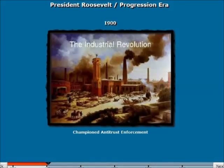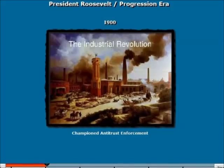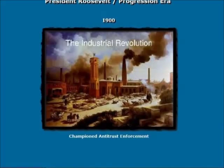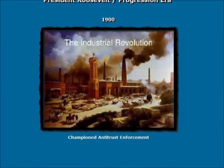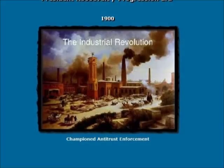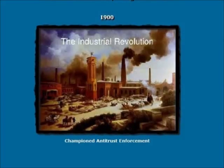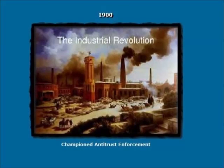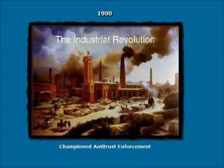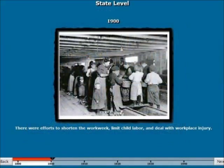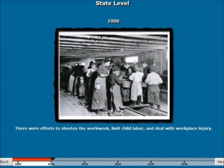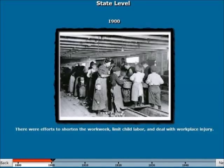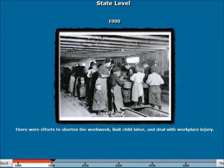At the turn of the century in 1900, Roosevelt was president and the country was going through what's referred to as the Progressive Era. During the Industrial Revolution, companies had become very monopolistic, so Roosevelt had anti-trust enforcements to break up companies in manufacturing, transportation, and some of the big oil companies. States were also dealing with the fallout of the Industrial Revolution — shortening work weeks, limiting child labor, and controlling workplace injuries.